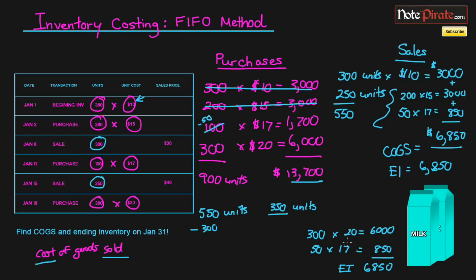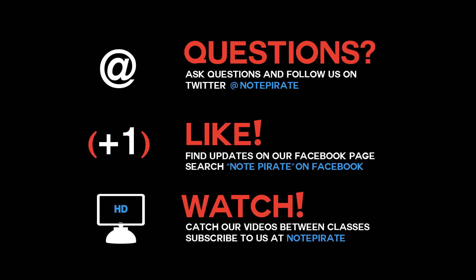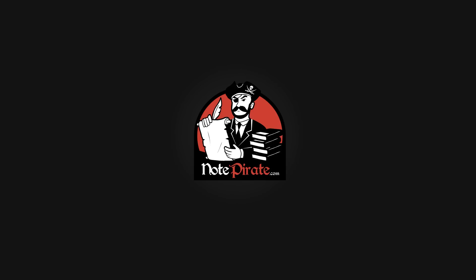That's basically the FIFO method. Make sure you always expense the most historical or oldest inventory first, and when figuring out cost of goods sold, use the unit costs — not the sales price. The sales price is only for revenue entries, which you'll see later. Hopefully this helped. Subscribe, and I'll see you in the next tutorial. If you have any questions, tweet us at NotePirate or like us on Facebook. Thanks for watching.